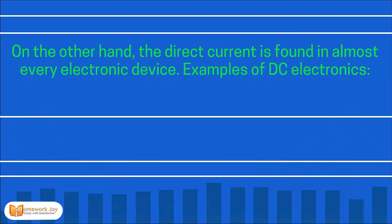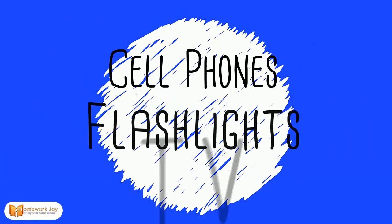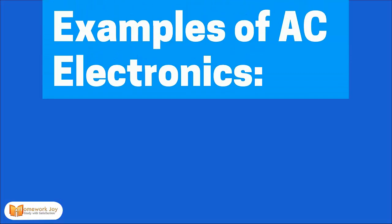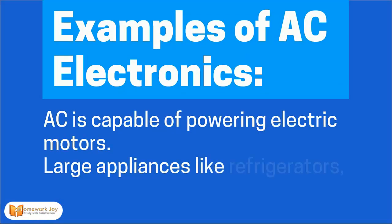Examples of DC electronics: cell phones, flashlights, and TVs. Examples of AC electronics: AC is capable of powering electric motors and large appliances.